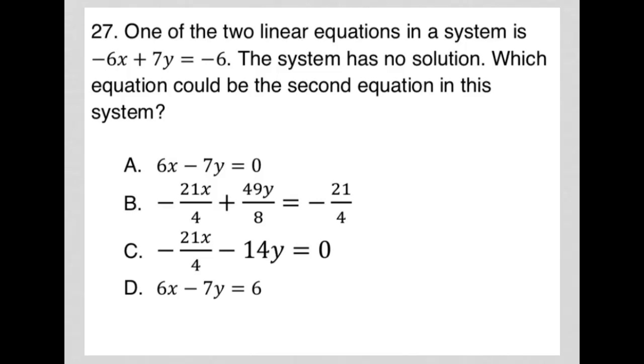This question says one of the two linear equations in a system is negative 6x. I'll just rewrite it here. Negative 6x plus 7y equals negative 6, right? So we're told that this is one of two linear equations in a system of equations. The next sentence says the system has no solution.